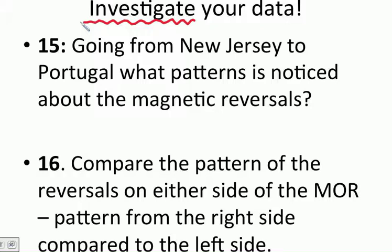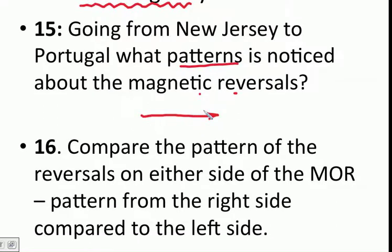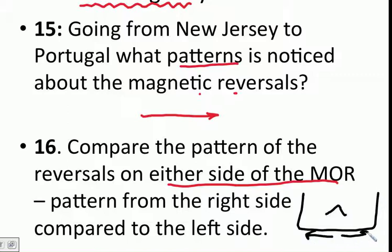First of all, looking at your data, going from New Jersey to Portugal, so looking this direction on your map, what is the pattern you notice about the magnetic reversals? And second, what do we notice the pattern on either side of the mid-ocean ridge? So again, you have your seafloor graph with the mid-ocean ridge in the middle. What do you notice about the data on this side compared to the data on this side? Go ahead and pause while you complete those two questions.